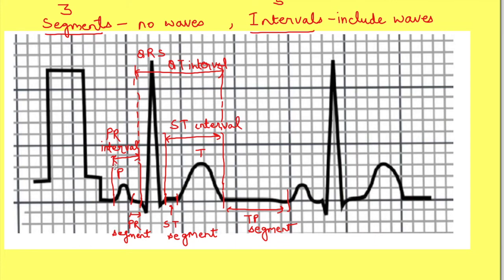I remember it by one mnemonic. Intervals include waves while segments do not. PR interval is on the P-wave side of the ECG, so it includes the P wave. ST interval is on the T-wave side, so it includes the T wave. QT interval includes both the QRS complex and T wave. Two other important intervals: RR interval is taken from the peak of one R wave to the peak of another R wave. PP interval is from the peak of one P wave to the peak of another — used when discussing certain abnormalities.